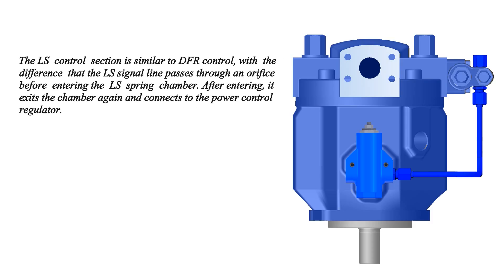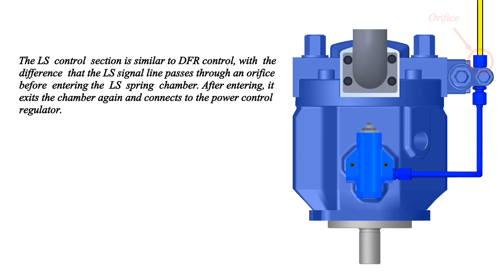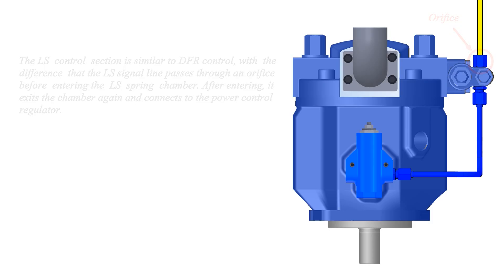The LS control section is similar to DFR control, with the difference that the LS signal line passes through an orifice before entering the LS spring chamber. After entering, it exits the chamber again and connects to the power control regulator.